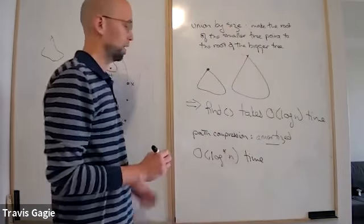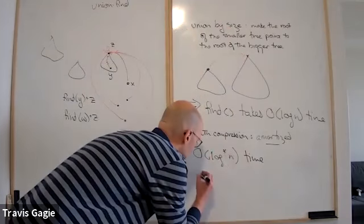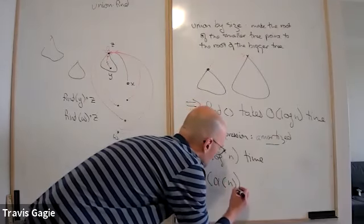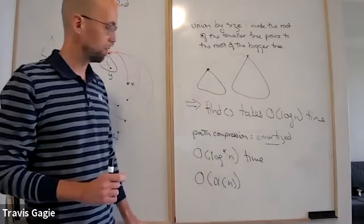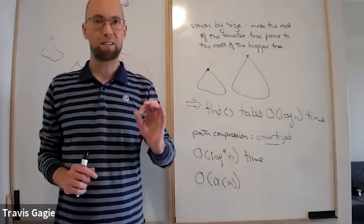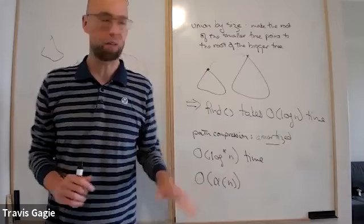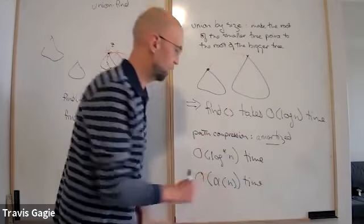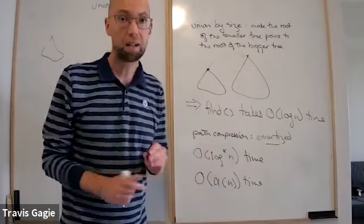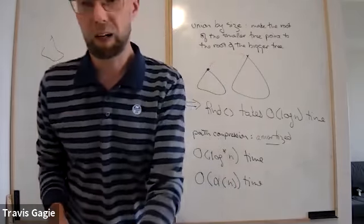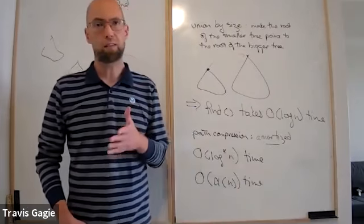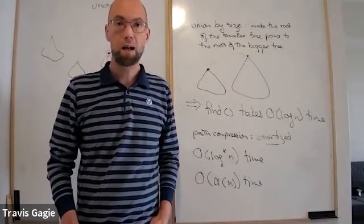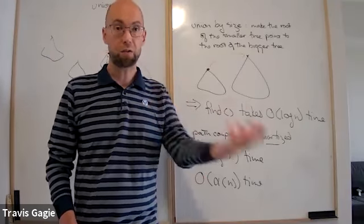In fact, the true bound is even better: amortized O(α(n)) per operation, where α is the inverse Ackermann function. It's not constant, but it's as close to constant as you could ever want. The proof of the inverse Ackermann bound is not in the book — they just prove log* n. That's how you implement Kruskal's efficiently using the union-find data structure.